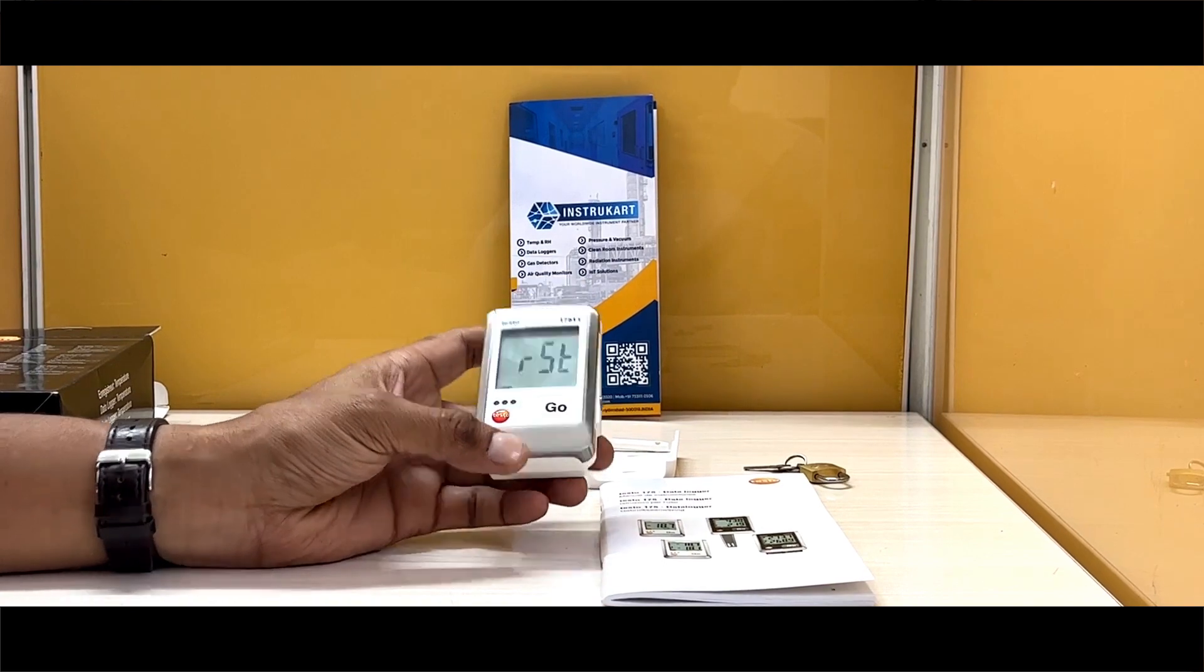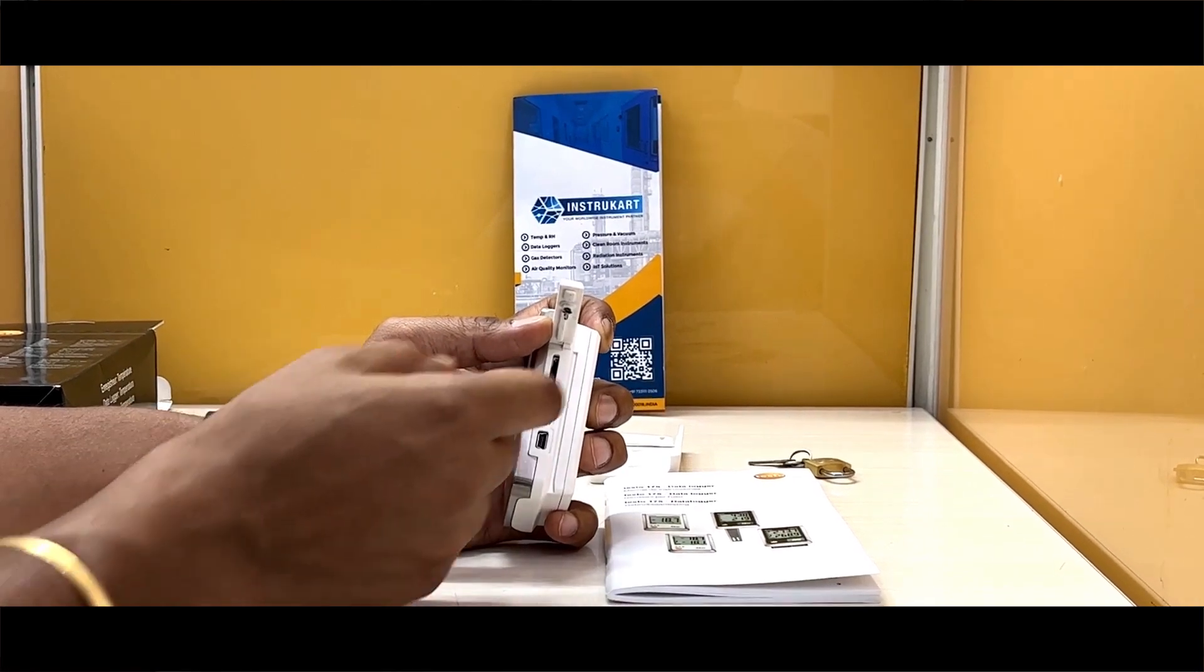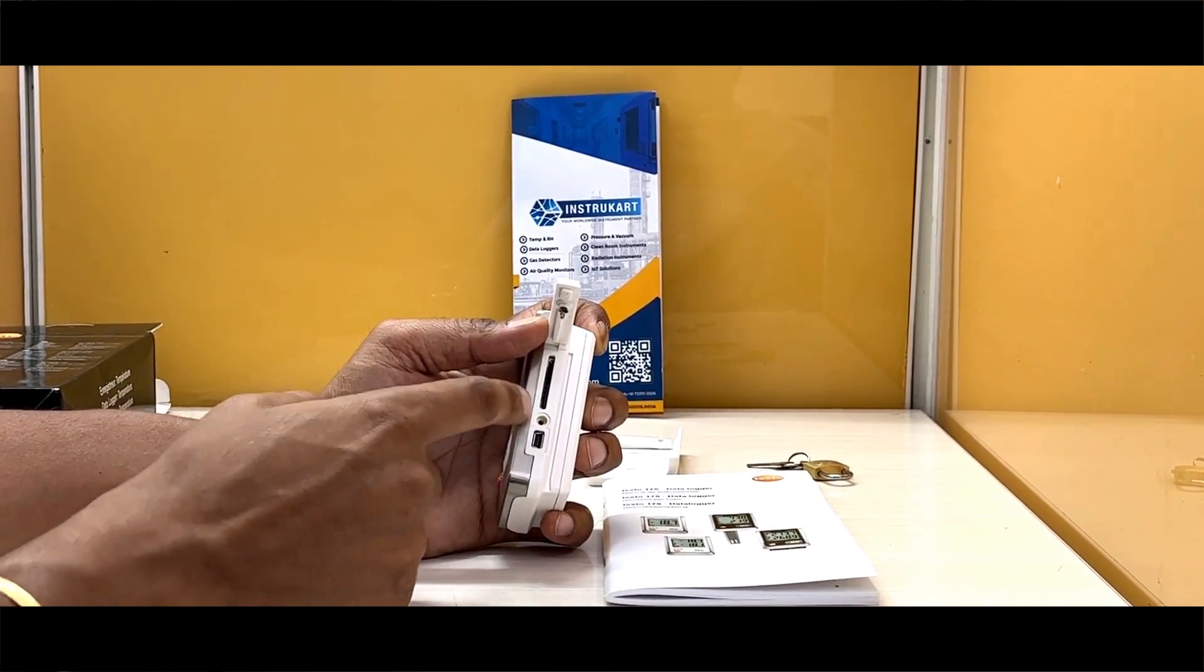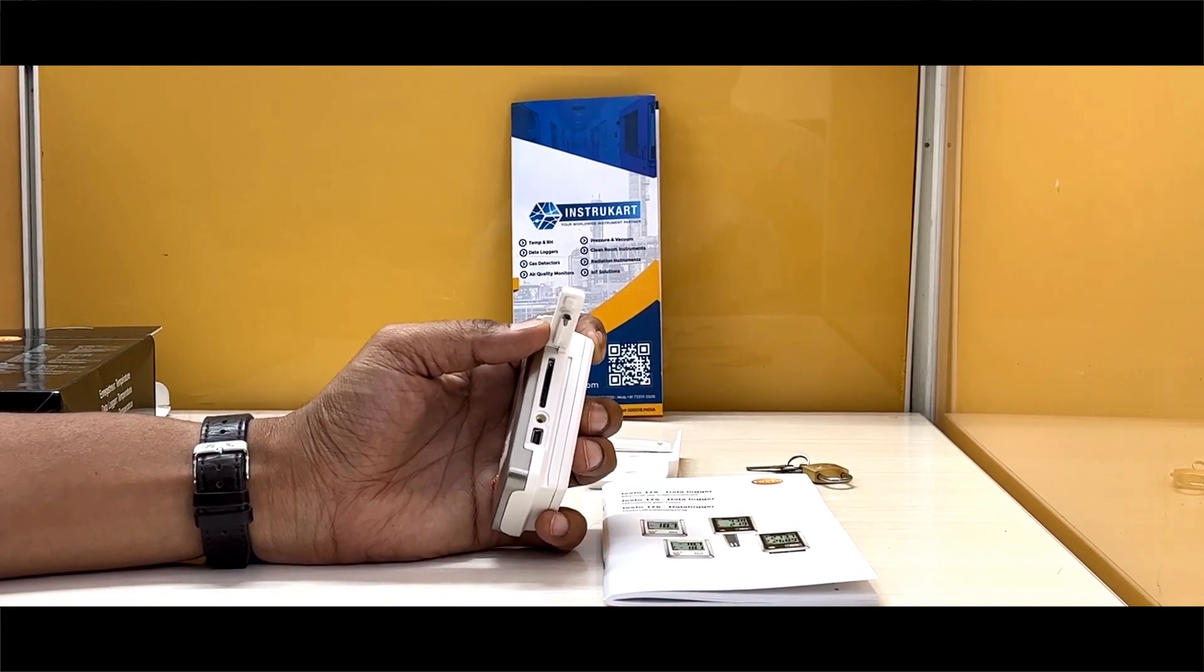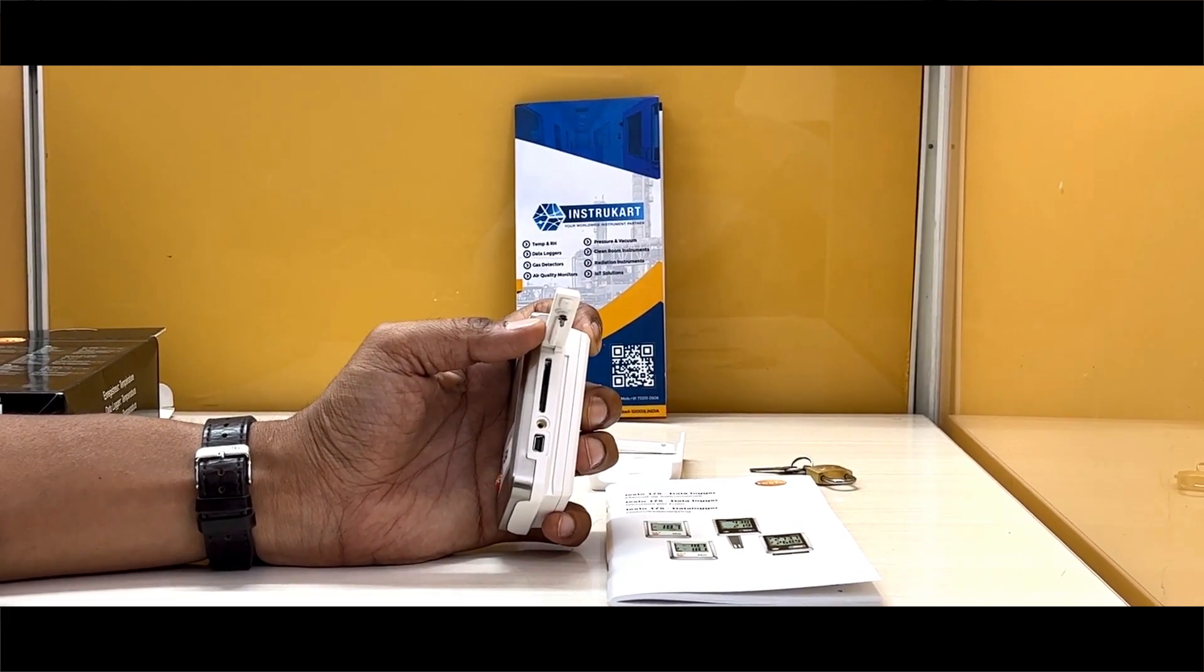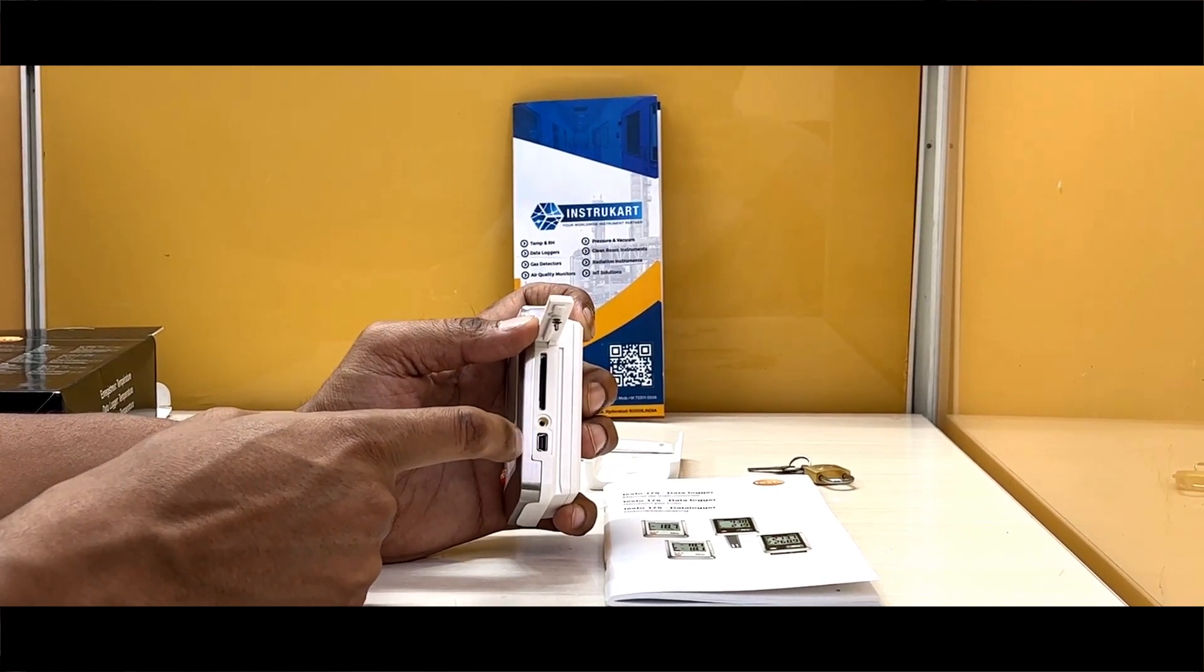As I show you at the side, it has an SD card option which means you can take the data from the SD card and connect to the PC. With the help of the testo software, you can download the data. You can also connect directly to the PC for configuring the device.